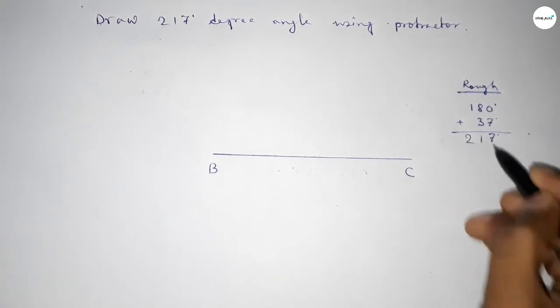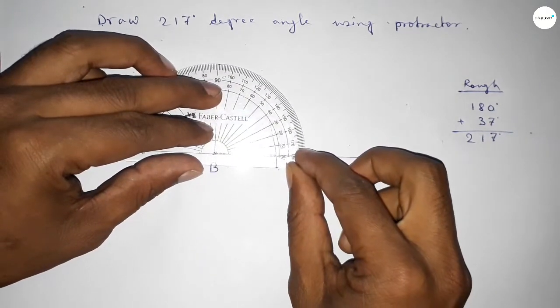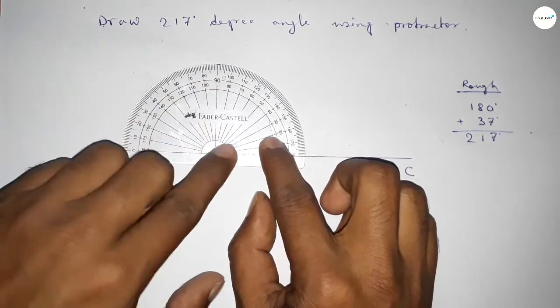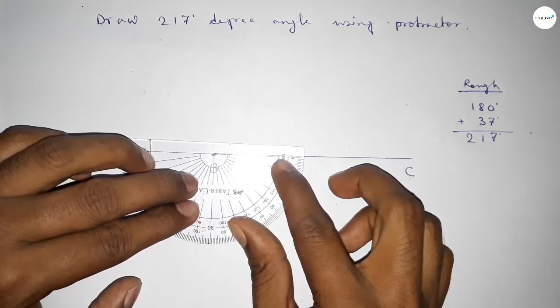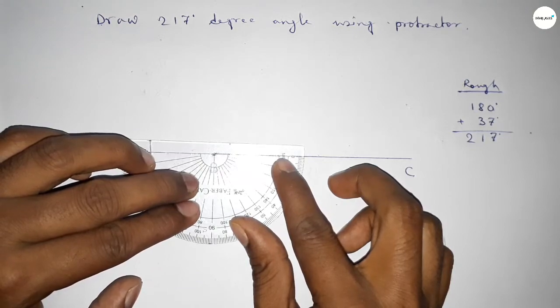So first we have to count 180 degree angle. So putting the protractor on the point B and counting 180 degree. So this is 180 degree, plus putting the protractor on the point B by this way.